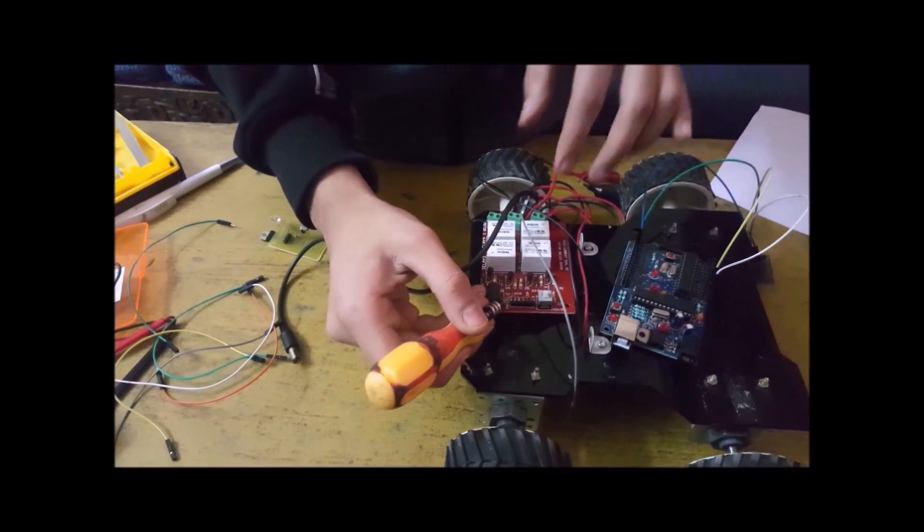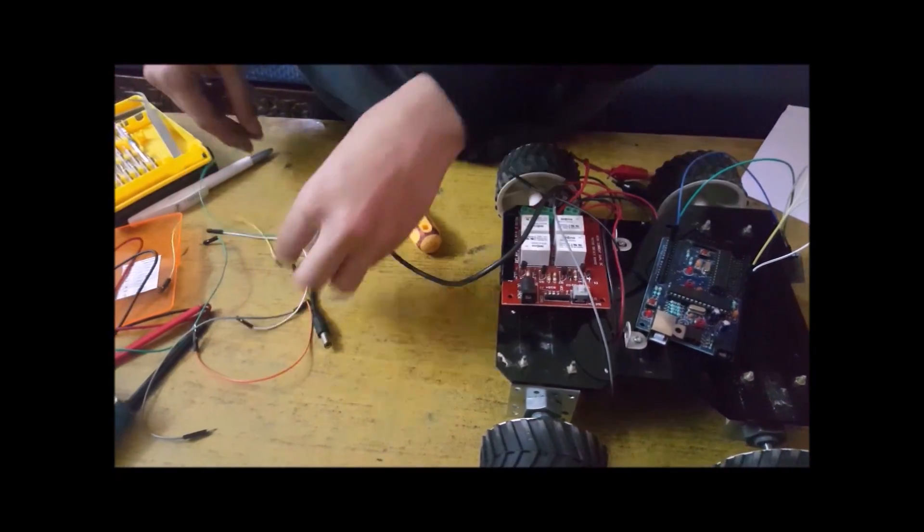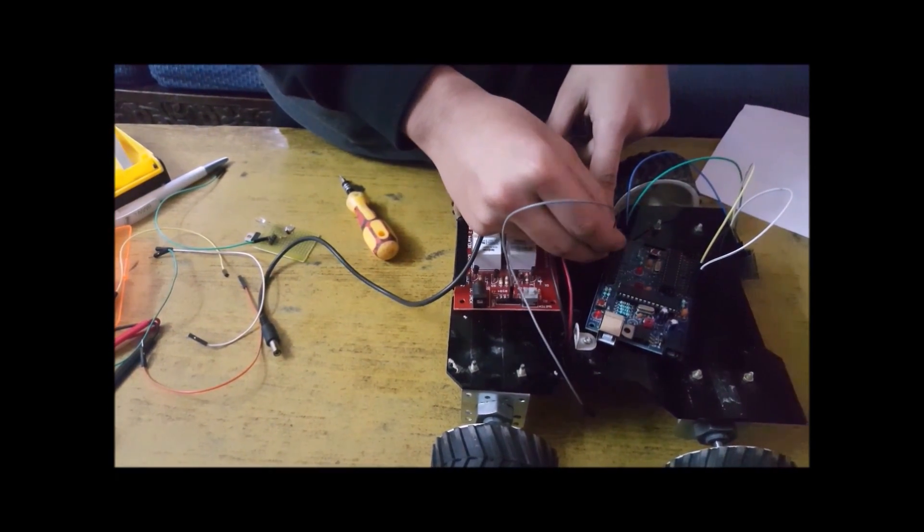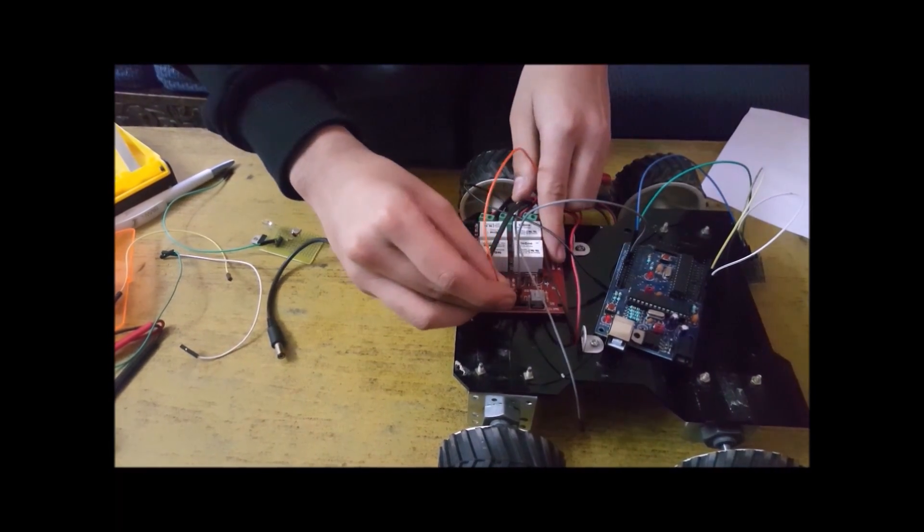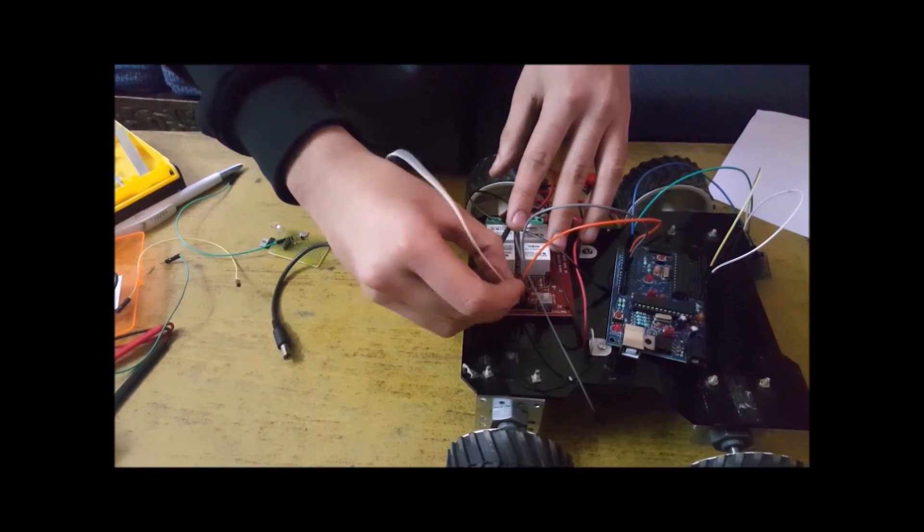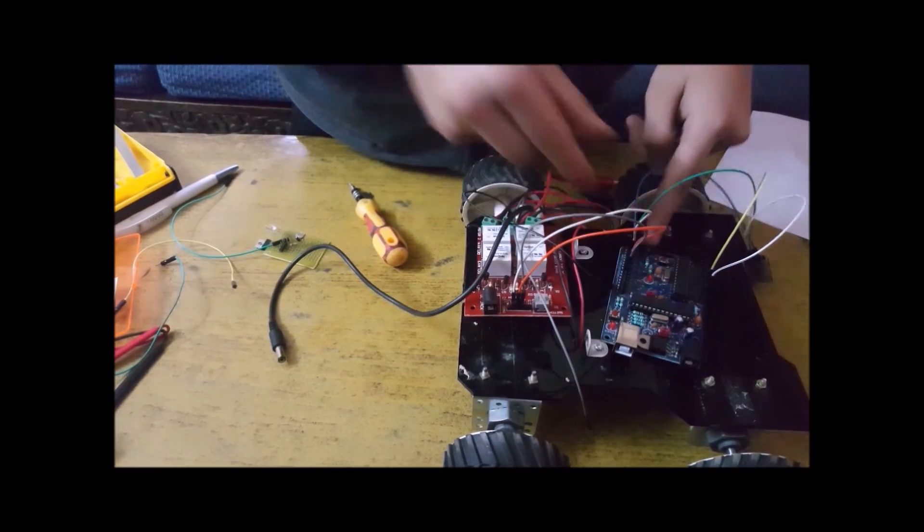Now connect the input 1 of the motor drive to the pin 10 of the Arduino. Input 2 to the pin 9 of the Arduino. Input 3 to the pin 5 and input 4 to the pin 6. Connect the VCC and GND to the battery of the motor drive.